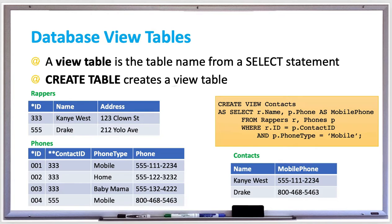With aggregate values, if a view query contains functions like SUM or AVERAGE, one aggregate value will correspond to many base table values. An insert or update to the view could create a new aggregate value that needs to be converted to many base table values. Since the conversion is undefined, the insert or update is not allowed.